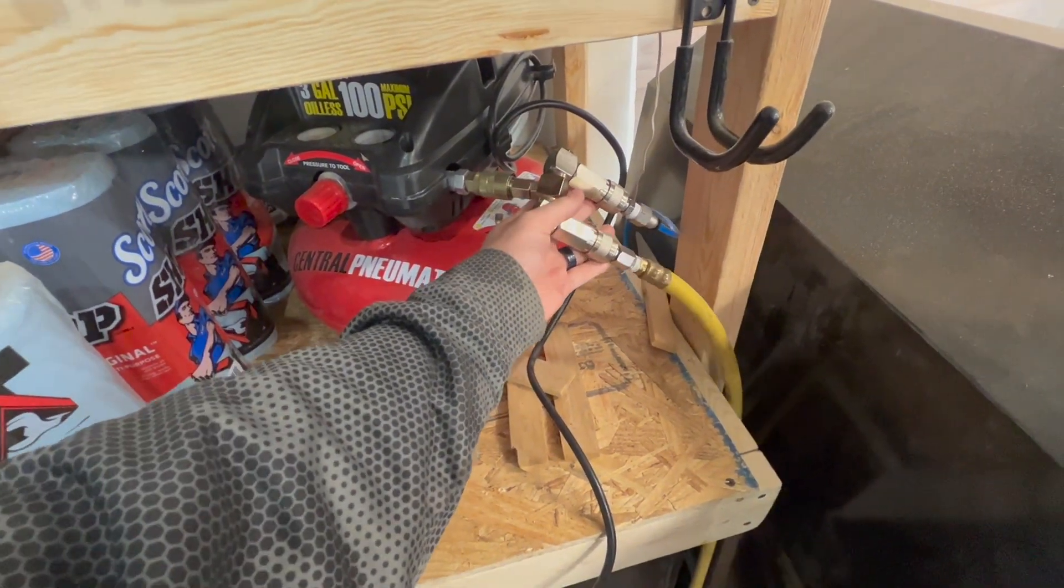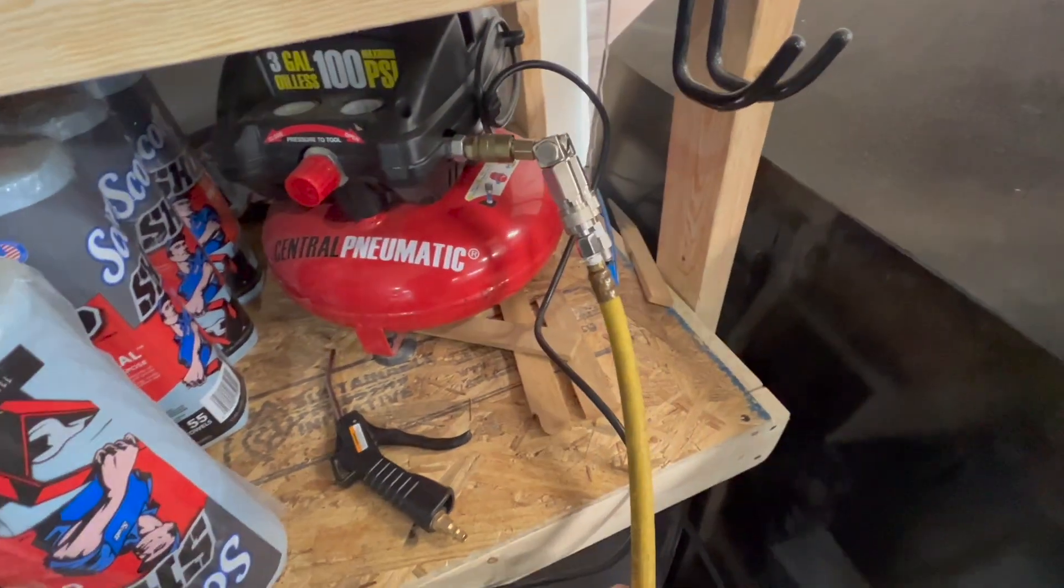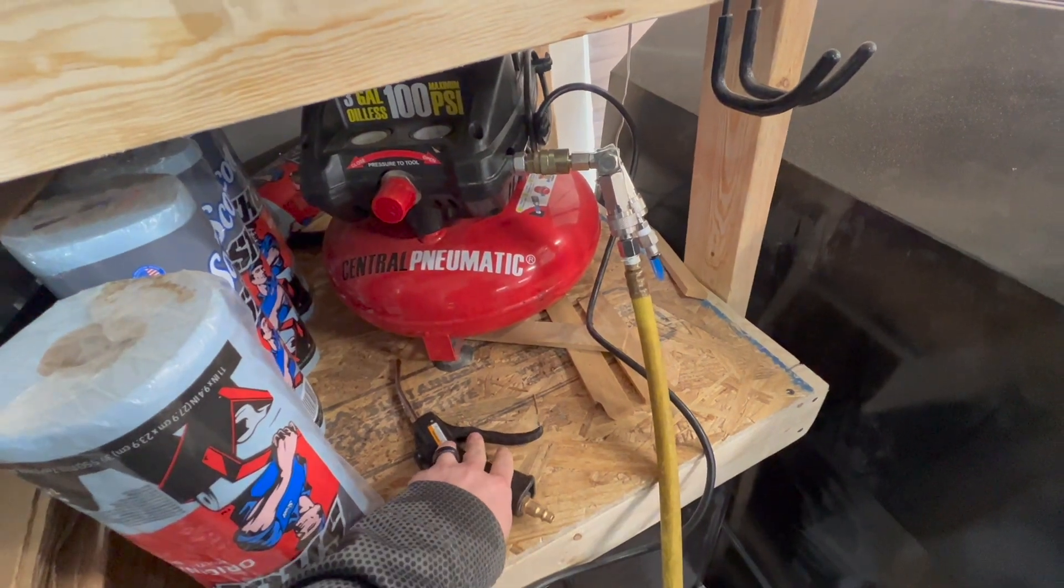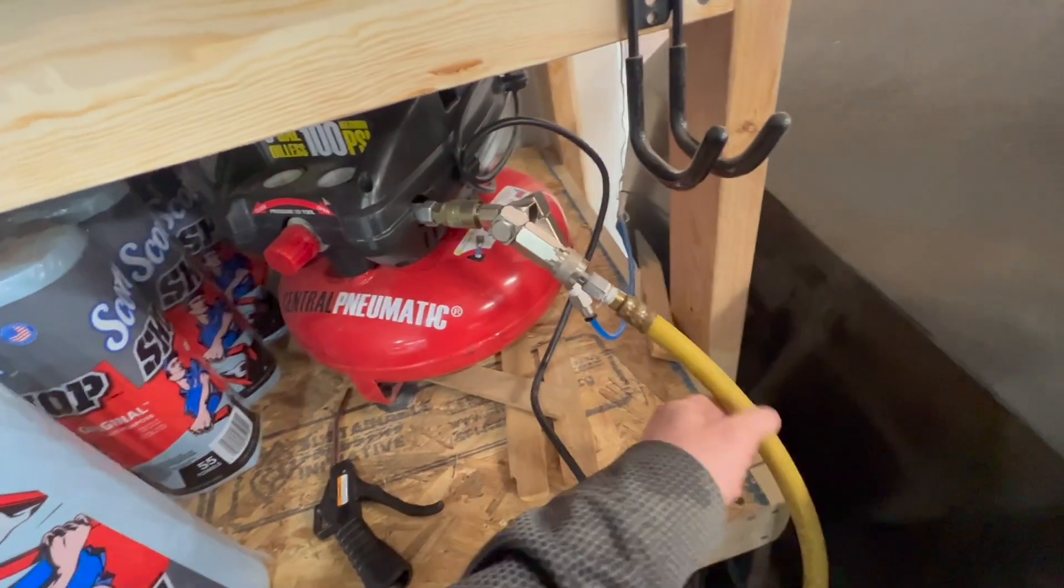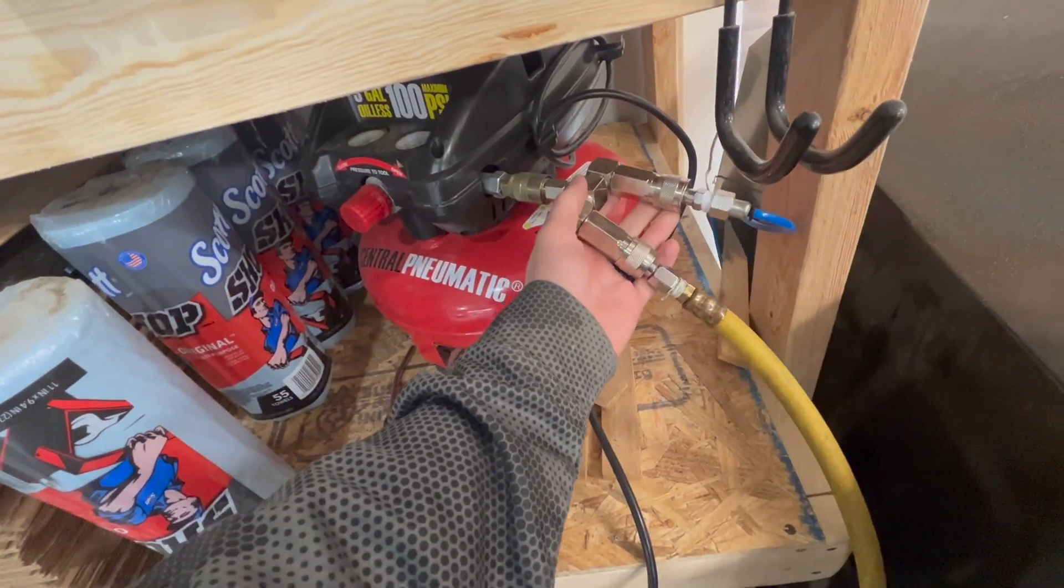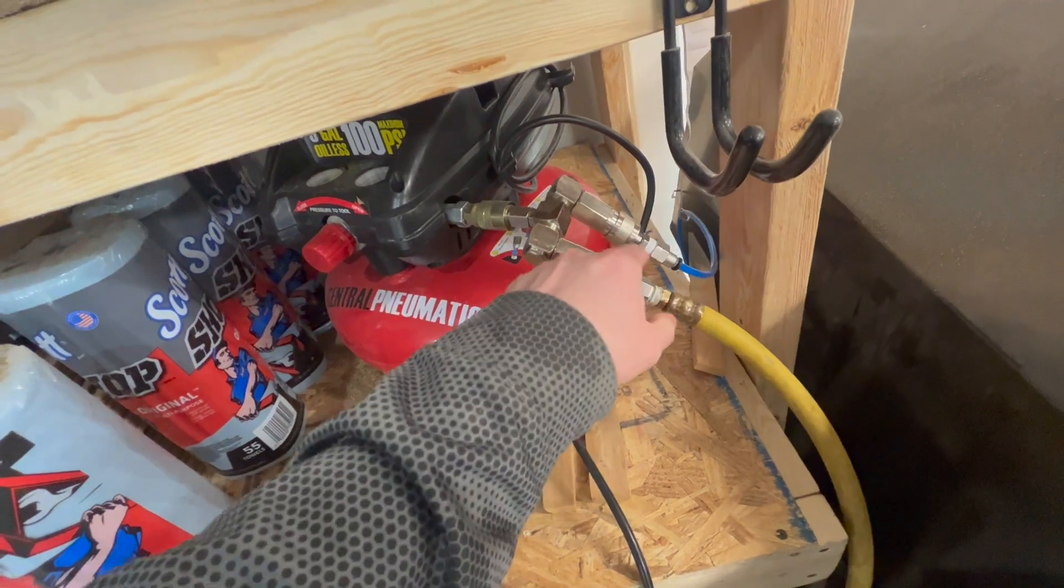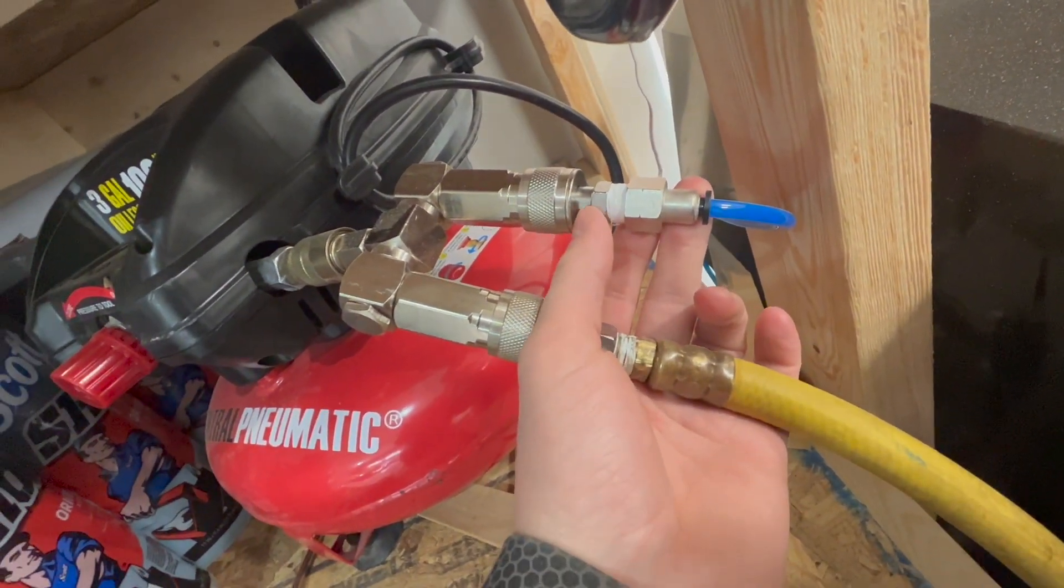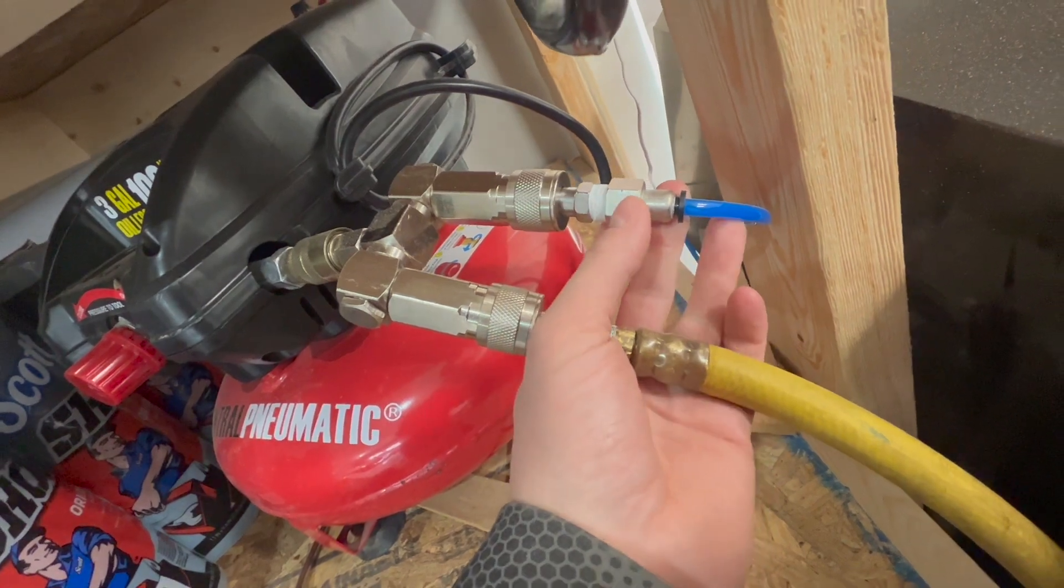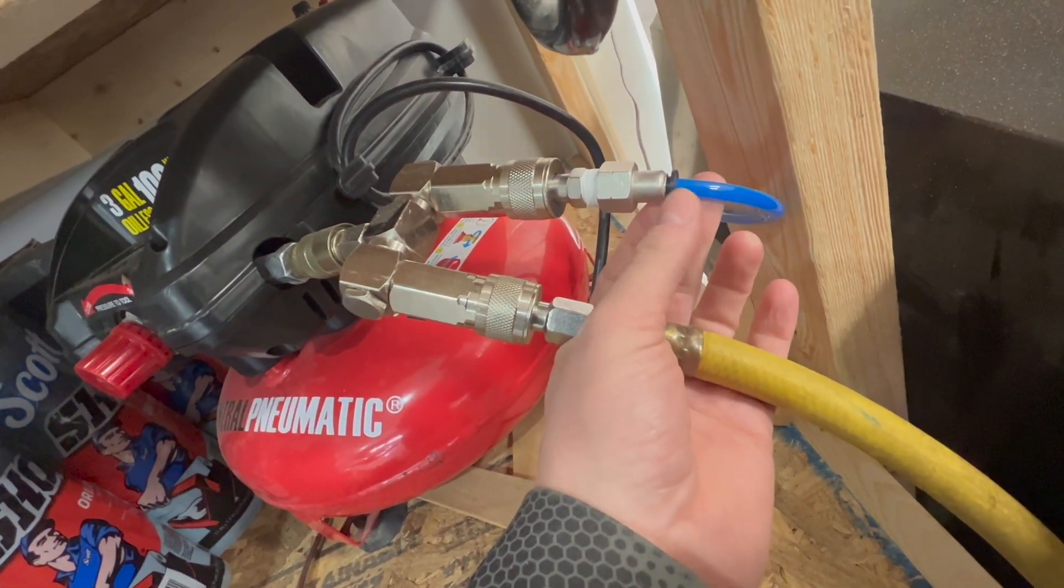I want to leave this hose connected at all times since I use it to blow off some projects, so it's handy. First thing you do is add the splitter, and then this connection goes from the quick connect to the quarter inch or six millimeter hose—they're the same.